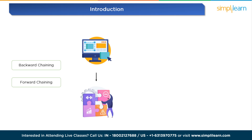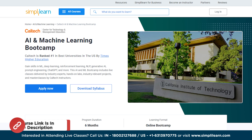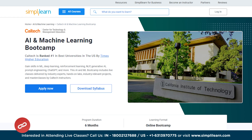The job opportunities in machine learning are as wide-ranging and abundant as the technology applications. The average annual salary for a machine learning engineer is $140,000 in the US, and in India the average annual salary is 20 lakh rupees per annum. If you are an aspiring AI/ML engineer, there is no better time to train yourself in the exciting field of machine learning with our Caltech AI ML Bootcamp in partnership with IBM.